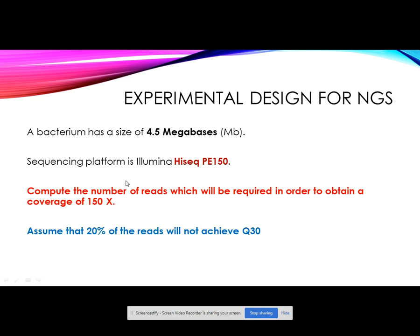For this particular topic, we are going to use the sequencing platform Illumina HiSeq Paired-End 150, and we will compute the number of reads required to obtain a genome coverage of 150x. Not all reads may achieve Q30, the high quality threshold required for assembly. For example, with a 4.5 megabase genome using a HiSeq PE150 system, we multiply the genome size by 150 to obtain the total data output required. We then assume that 20% of reads will not reach Q30 and deduct this from the total, meaning we may need to upgrade coverage to around 160 to 170x. This is the general approach researchers undertake for genome sequencing experiments.